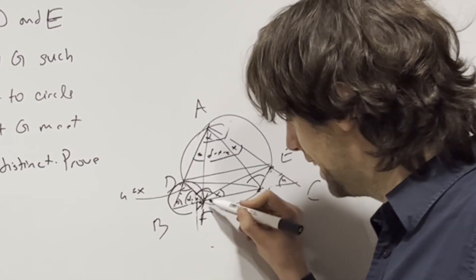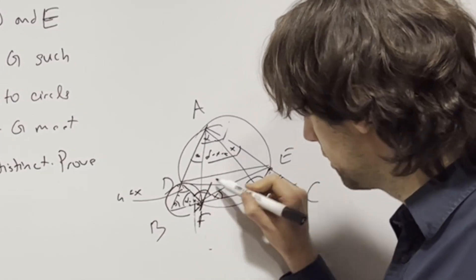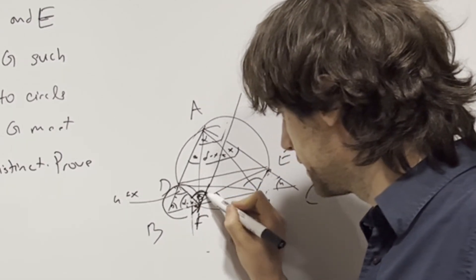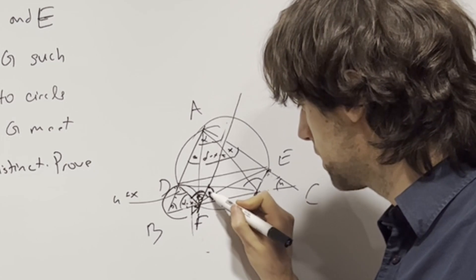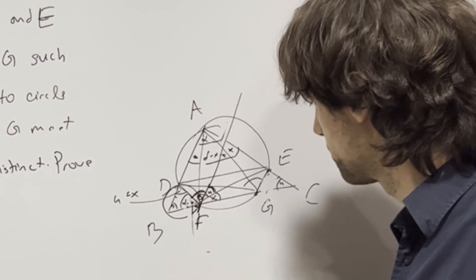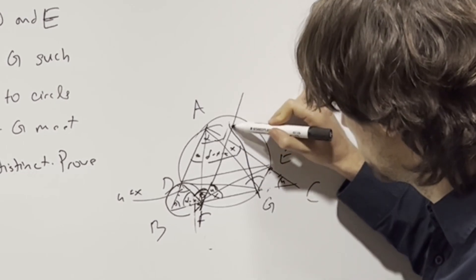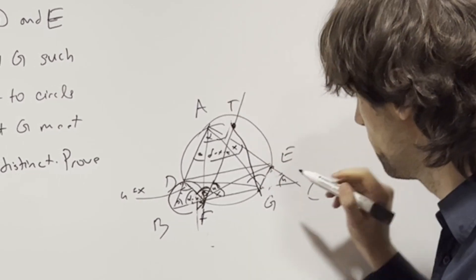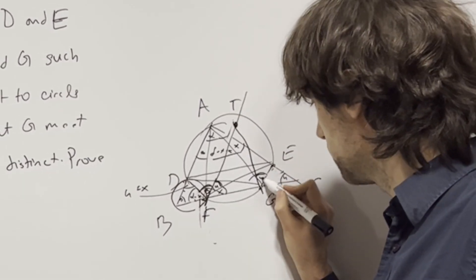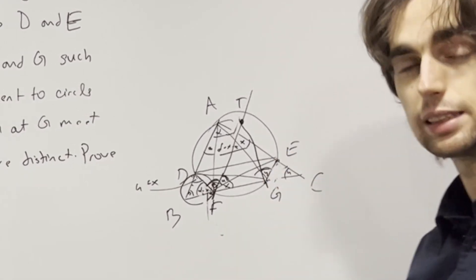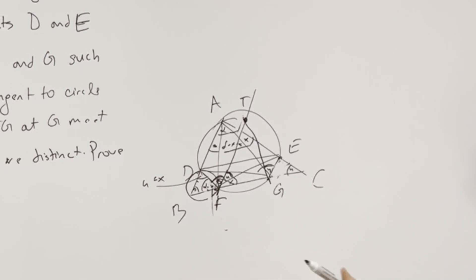Now when I take this tangent to this circle at F, it forms an angle of beta here. So it means this other angle is gamma. Now if I take the tangent, intersect to that T, it forms an angle of gamma here. So now what do we have from this? I invite you to maybe draw a better diagram than me.